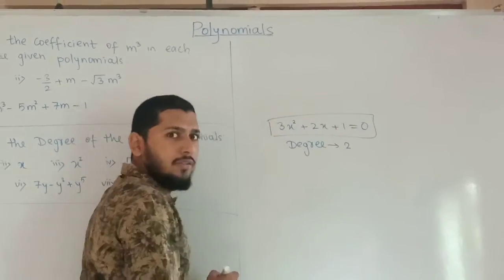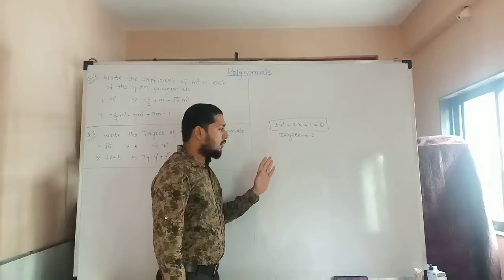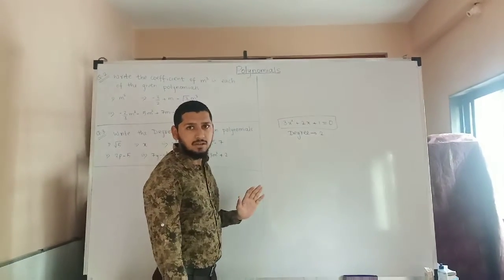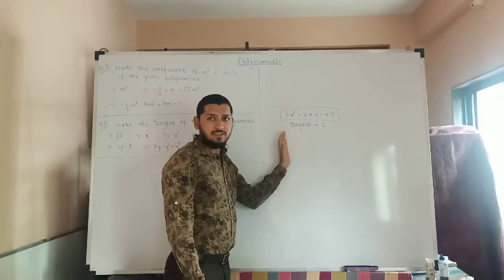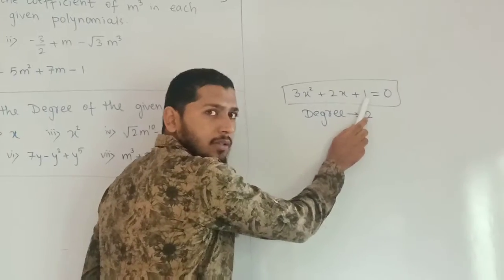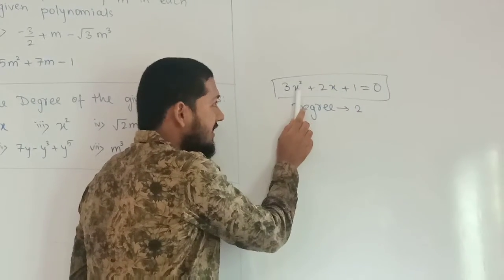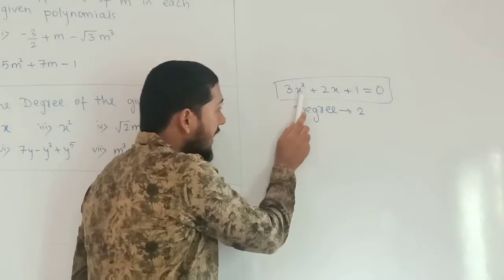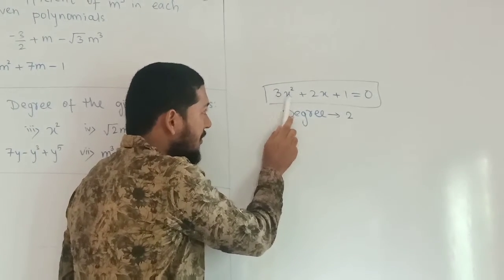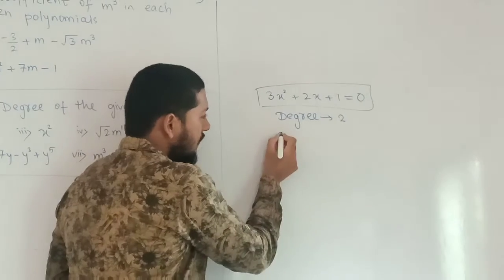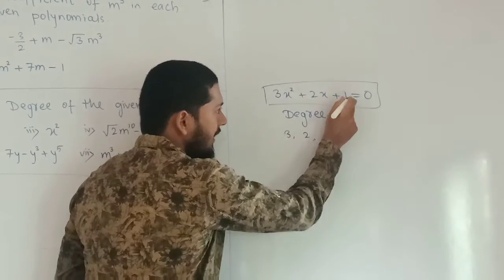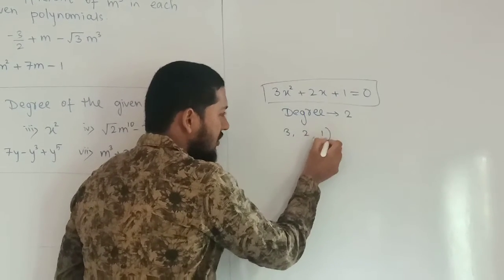Now let's see what the coefficients are. Coefficients are nothing but the multiples of the variable. The multiple of x squared is 3, so 3 is the coefficient of x squared. Here 2 is the coefficient of x, and here 1 is the coefficient of the constant.